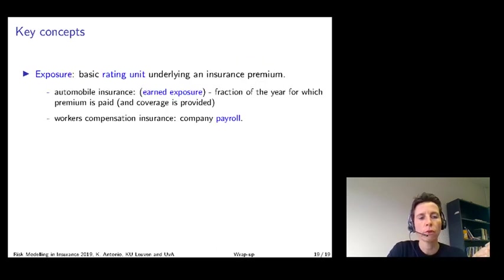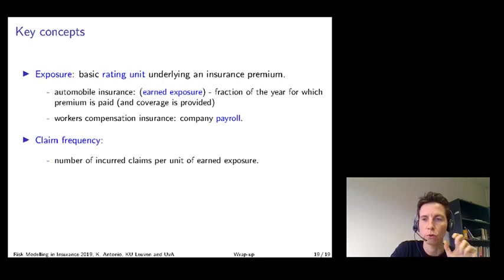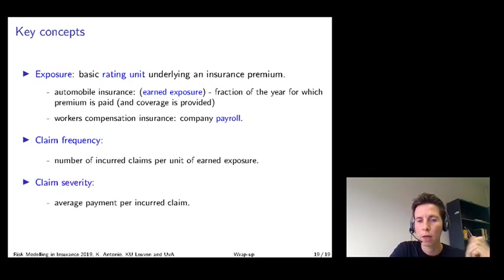To conclude, you covered three key concepts that will be useful in the rest of the course. There is exposure to risk, which refers to the basic rating unit underneath a non-life insurance contract. For instance, in motor insurance, that is typically the period during which coverage is provided. In workers' compensation insurance, exposure to risk is expressed as the number of full-time equivalents on the company's payroll. Second element is the notion of claim frequency, the number of incurred claims per unit of earned exposure. And last, we discussed the claim severity, the average payment per incurred claim. That concludes this first lecture for the course.